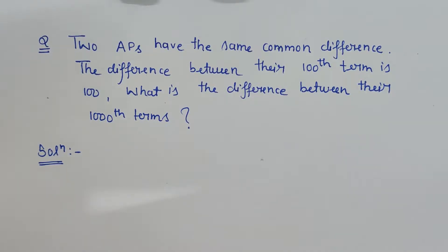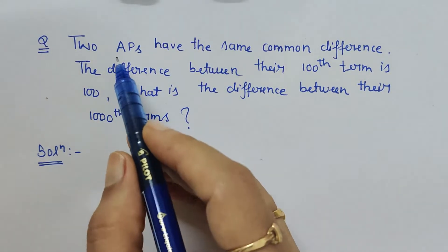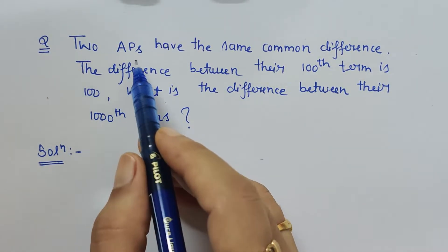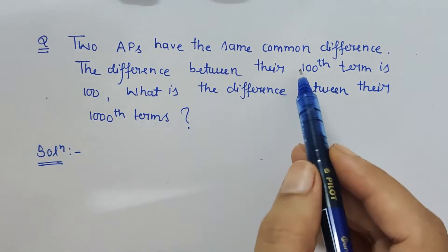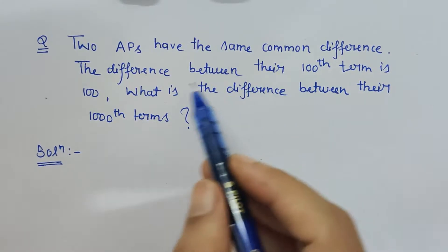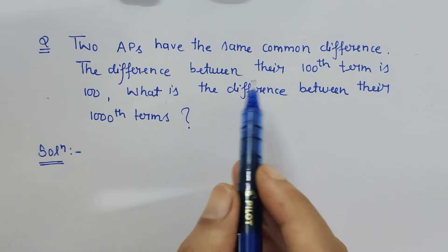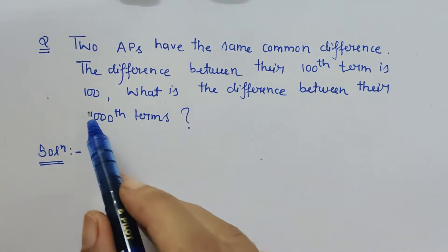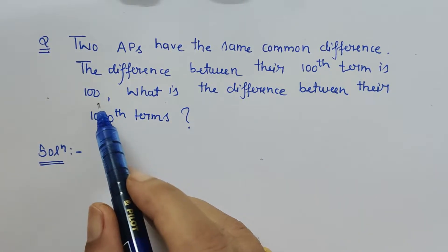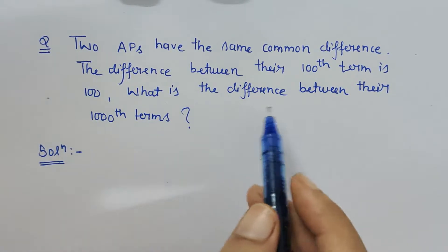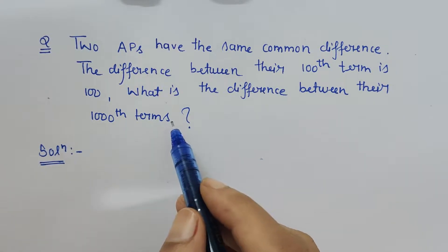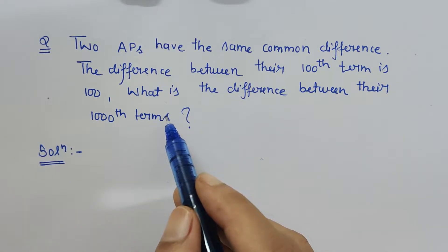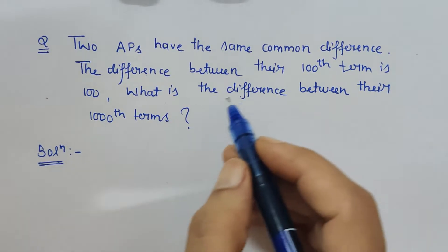Hello friends. The question says there are two APs which have the same common difference. The difference between their hundredth term is 100. What is the difference between their thousandth term? Let's proceed as per the question.